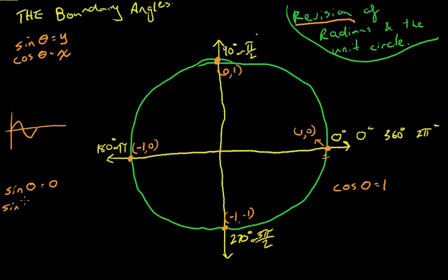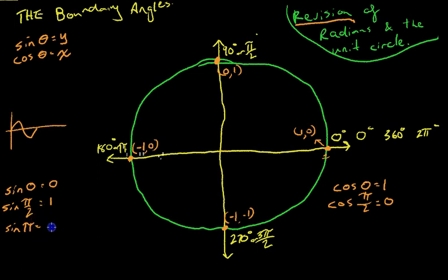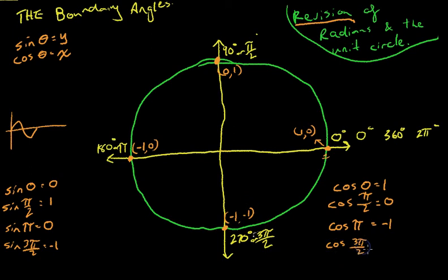Continuing — I'm going to use radians here because we really need to get used to it. Sine pi on 2: that's one of our boundary angles, that's 90 degrees. Our y value at this point is equal to 1. And cos pi on 2 is equal to 0. Moving on: sine pi — our y value this time is 0 again. Cos pi — our x value is negative 1. And down here, sine 3 pi on 2 is going to be equal to negative 1, since sine theta equals y and our y value is negative 1.